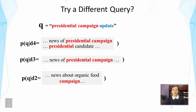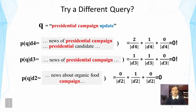However, if we try a different query like 'presidential campaign update,' we might see a problem. None of these documents mentions 'update.' According to our assumption that a user picks words from a document, the probability of obtaining the word 'update' would be zero. This causes all documents to have zero probability of generating this query. While it's fine to have zero for D2, which is non-relevant, it's not okay for D3 and D4 — we can no longer distinguish them from each other or from D2.